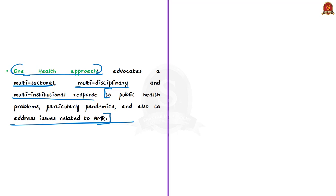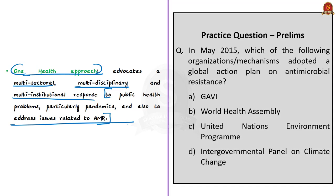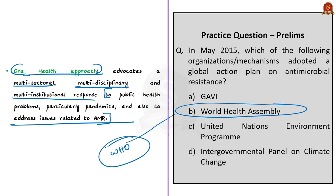The question asks which organization adopted the Global Action Plan on Antimicrobial Resistance in May 2015. The correct answer is option B, World Health Assembly. The World Health Assembly is the decision-making body of the World Health Organization, attended by delegations from all WHO member states, focusing on a specific health agenda prepared by its executive board. Its main functions are to determine the policies of the organization, appoint the director general, supervise financial policies, and review and approve the program budget of WHO. The World Health Assembly is held every year in Geneva, Switzerland.